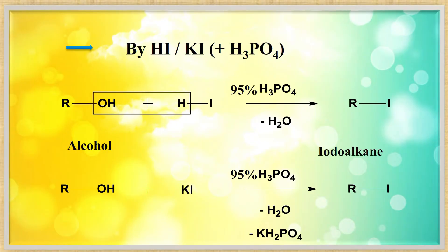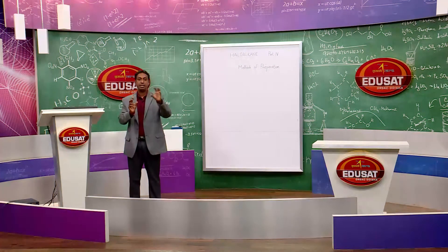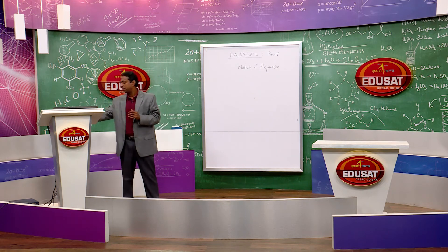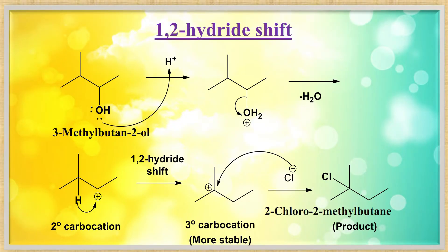Using HI: can also use KI with H3PO4 (phosphoric acid). Same mechanism: OH is removed, I⁻ attacks. R-OH + HI → R-I + H2O; byproduct if using KI is KH2PO4 and water. The key is that OH and H combine to form water (removed), and R attaches to the halogen.